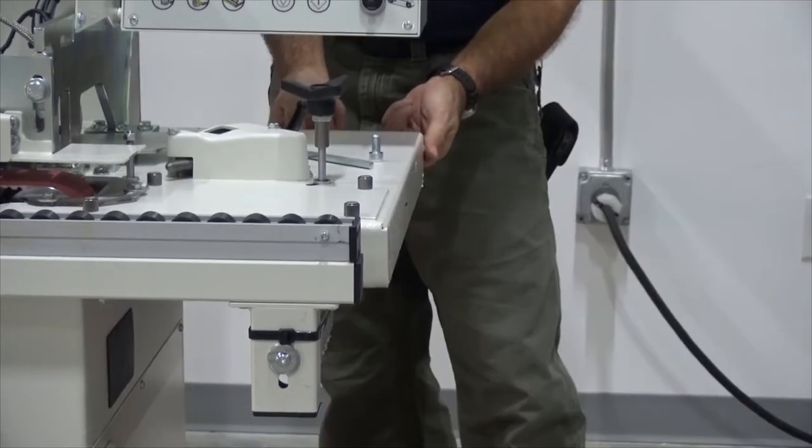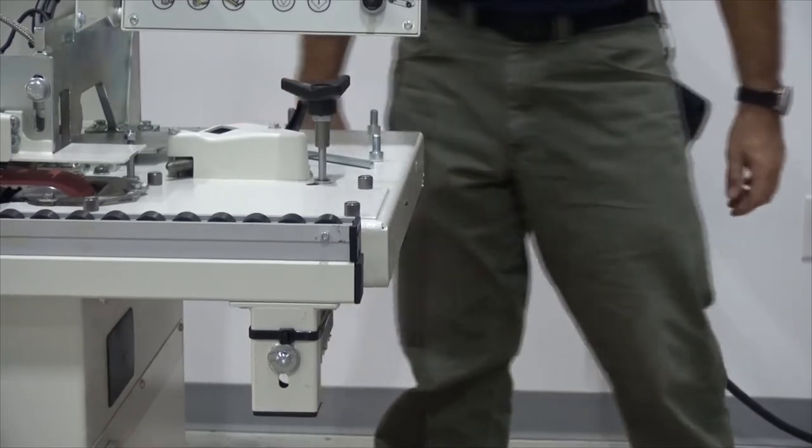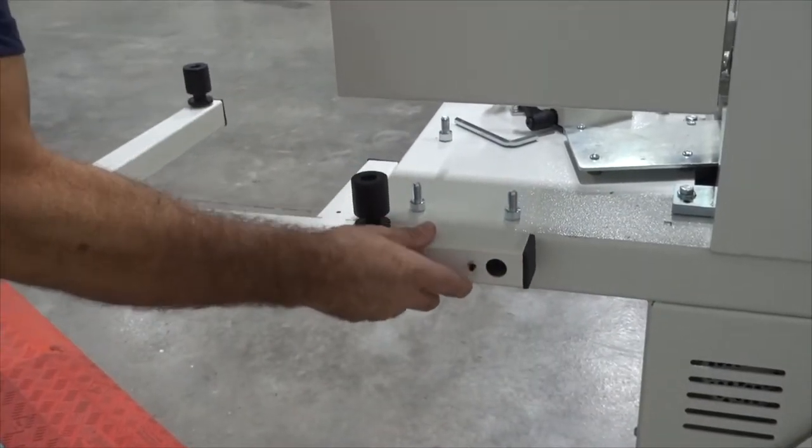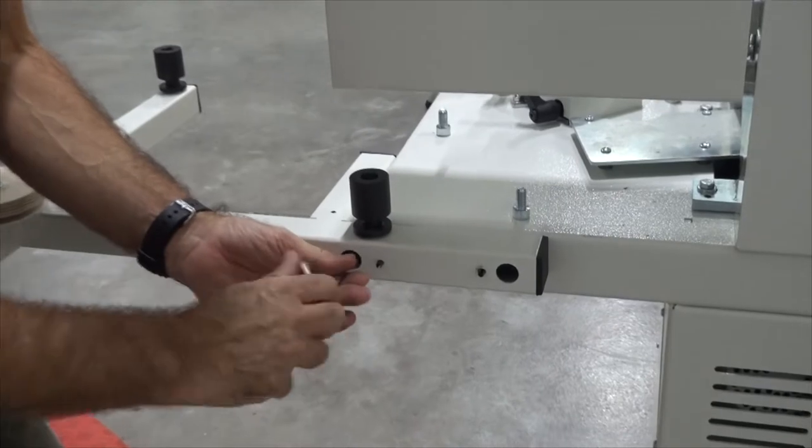First install the tape reel holder. Make sure you insert the alignment pins into their respective holes. Install the bolts and tighten them down.